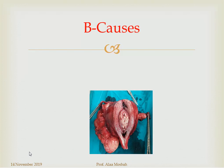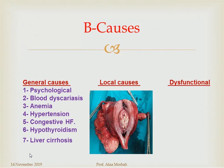What are the causes of abnormal bleeding? We have general causes, local causes, and dysfunctional causes. Dysfunctional is diagnosed only after exclusion of local and general causes. An example of local causes includes fibroids: submucosal fibroid, intramural fibroid, and broad ligament fibroid. This intracavitary lesion causes bleeding, commonly heavy menstrual bleeding during menstruation. General causes may be psychological, blood diseases, anemia, hypertension, congestive heart failure, hypothyroidism, and liver disease.